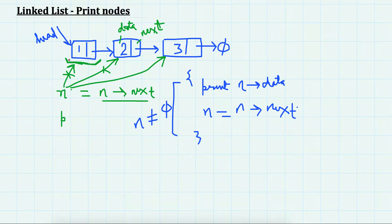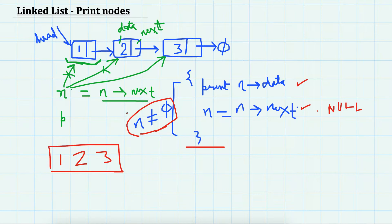So initially n is pointing to head, so it will print one. One is printed and n is updated to two. Now n is moved to two. Again n is not null, so it will print two and move it to three. Again this is not null, so print three and move it to its next, and its next is null. So now it will become null after printing three, and this condition will not be satisfied. Then it will exit the loop and it will stop here. So it will print one, two, and three, all the elements of the list.